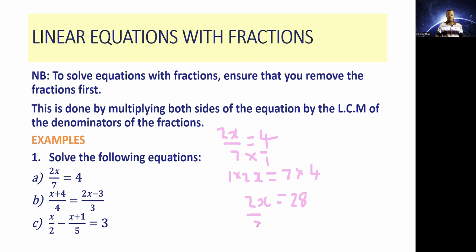So now we divide both sides of the equation by 2. The 2s cancel on the left side, leaving us with x. Then 2 into 28: 2 into 2 gives 1, 2 into 8 gives 4. So the value of the variable x in the first equation is equal to 14.